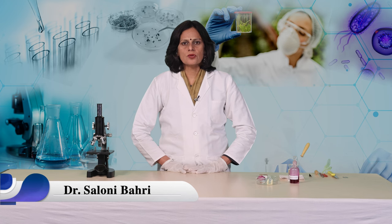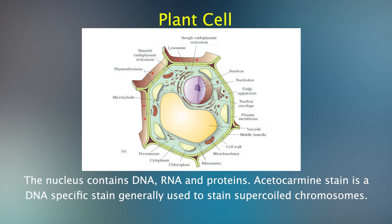All living organisms are composed of cells. Cell is a structural and functional unit of life. In plants, cells have an outermost rigid cell wall beneath which is a cell membrane. The cell membrane encloses cytoplasm, cell organelles and a nucleus. The nucleus contains DNA, RNA and proteins.